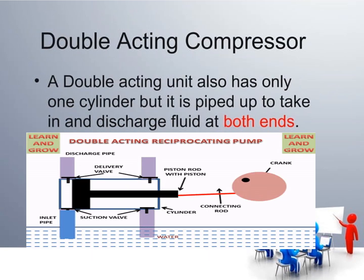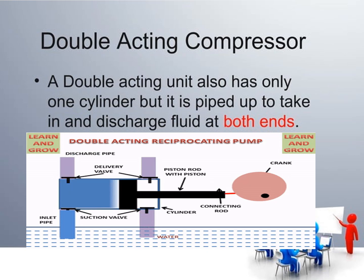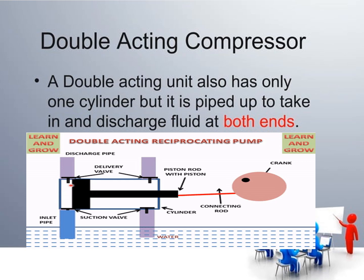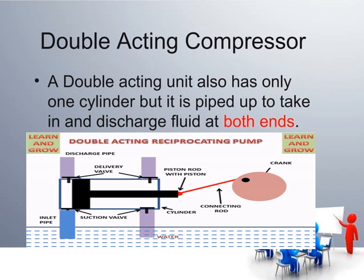The double acting compressor also has only one cylinder, but it is piped to take in and discharge fluid at both ends. While the crank rotates, the piston moves through expansion and compression. Expansion occurs when pulling the piston out and compression occurs when moving toward the cylinder. There is a suction valve and a delivery valve, and the piston moves in both directions — this is the double acting reciprocating type.